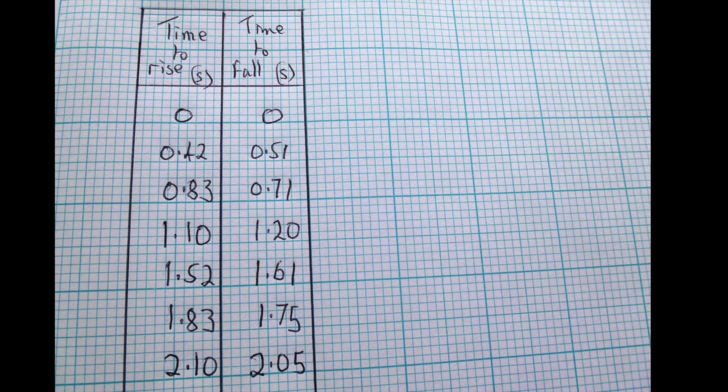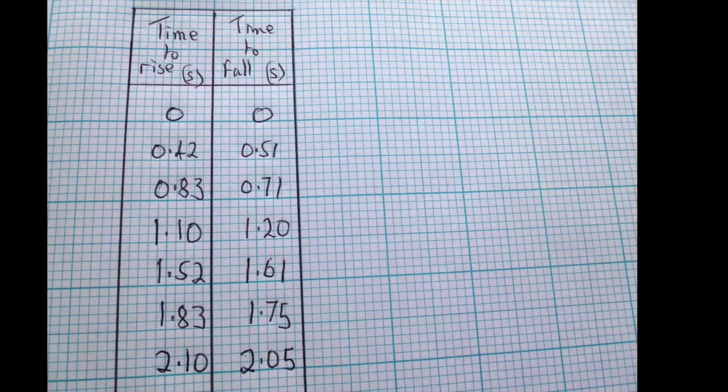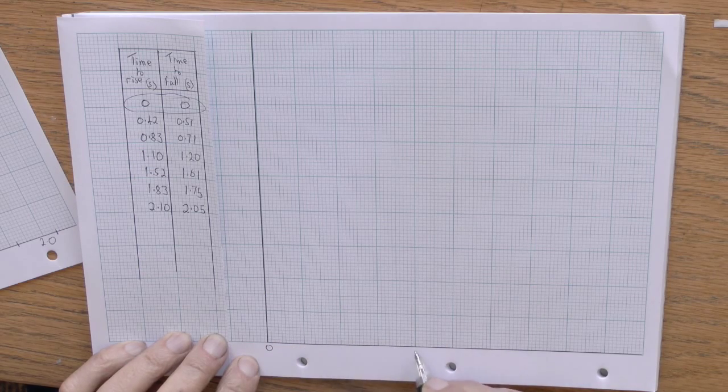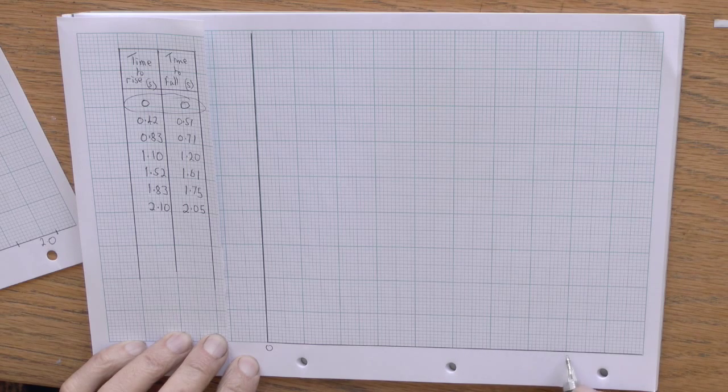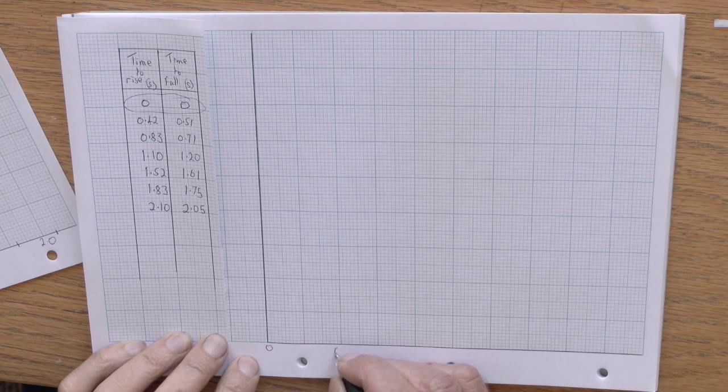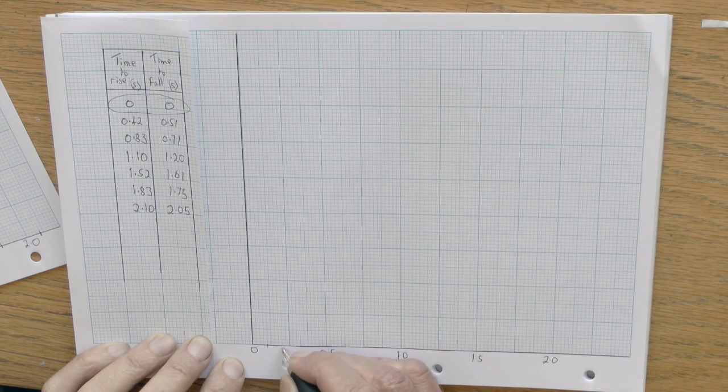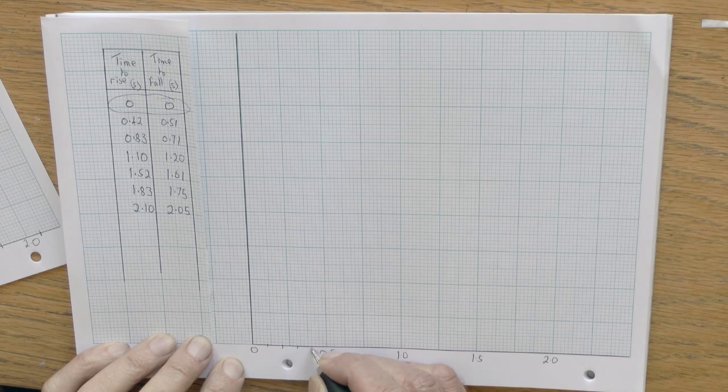These pairs of results, shown here, are going to be graphed one against the other to see if there's a relationship between them. To make the graph useful and accurate, it should be as large as possible whilst using a scale which is fairly simple. The scale I've used here is 1 second to 8 cm.